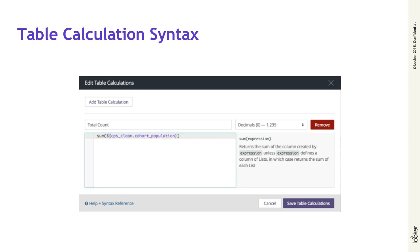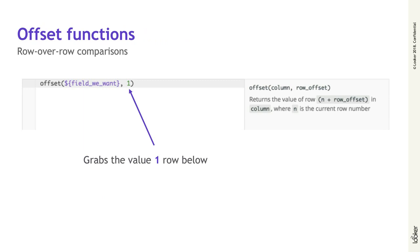Now that we've got ifs and conditional logic under our belt, I want to talk about moving around the data table. Offset functions are used for row-over-row comparisons. In this simple example, we can type an offset, the name of a field we want, and a number value of how much we want to offset by. If I put an offset of one, that will grab the value one row below.